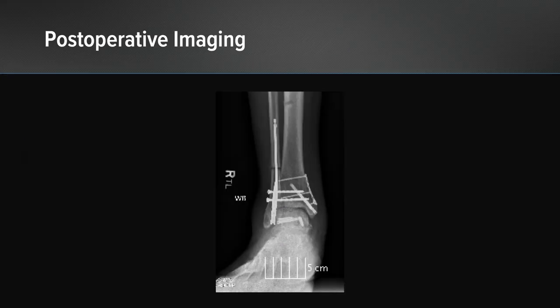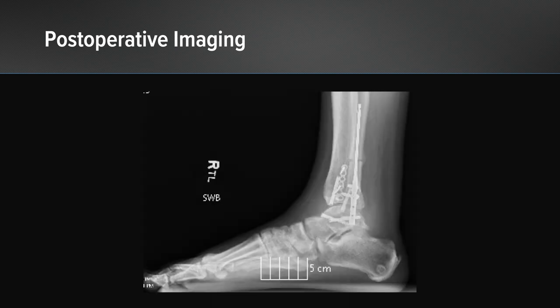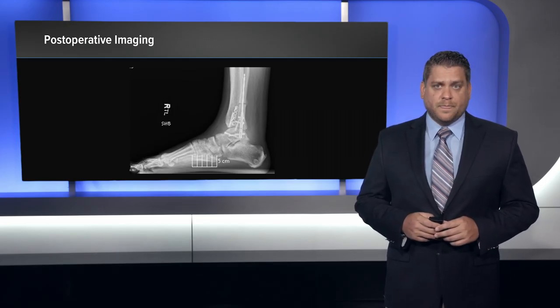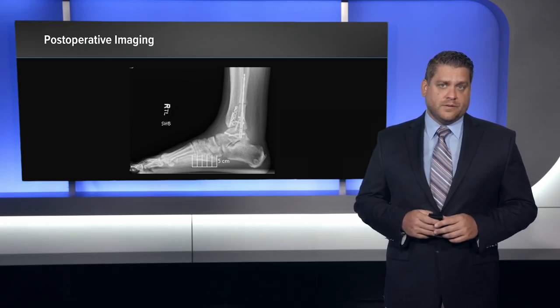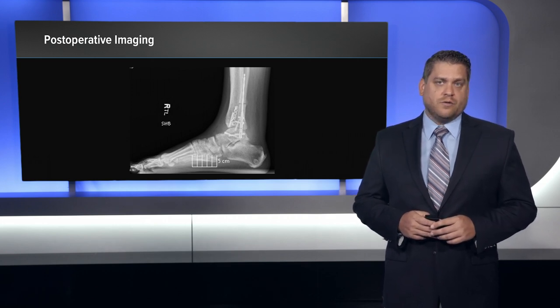These images are approximately four months out from surgery. On the lateral view we see that the talar body has consolidated nicely. At this point the patient is full weight bearing with minimal limp, some tightness of the Achilles, and is overall doing very well with minimal discomfort.